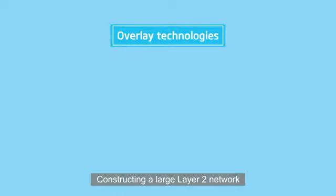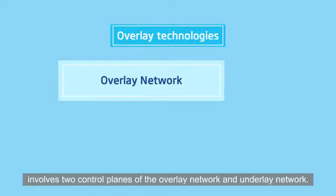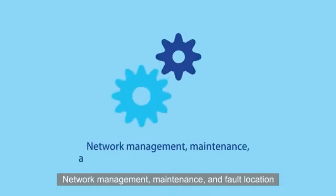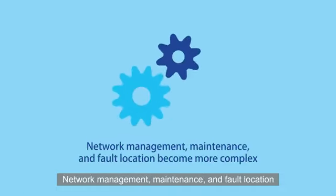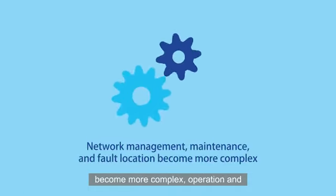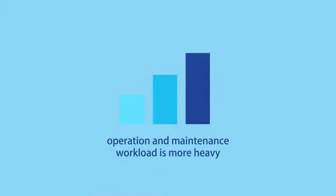Constructing a large layer 2 network with overlay technologies involves two control planes: the overlay network and the underlay network. Network management, maintenance and fault location become more complex, and operation and maintenance workload is heavier.